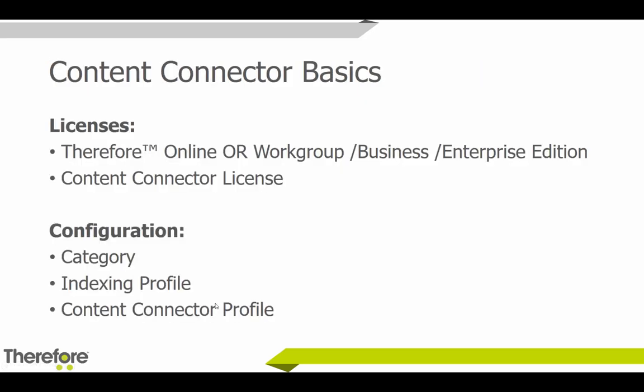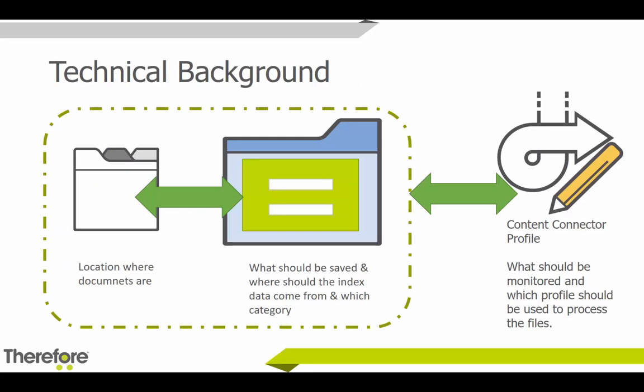To use the Content Connector you need two licenses: a Therefore license — either Therefore Online, Workgroup, or higher — as well as a Content Connector license. On the configuration side, you'll need to configure a category for saving the information, an indexing profile, and the Content Connector profile. The Content Connector uses an indexing profile to define what should be saved, where the index data should come from, and which category the information should be saved in. Once the indexing profile is defined, the Content Connector profile determines what should be monitored and which profile should be used.